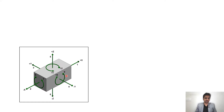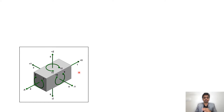Here you can see a part in space. Let's consider this is an object in space. How many degrees of freedom does this part have? When I say degree of freedom, I mean in how many different directions this part can be moved. We have three different axes in space: X, Y, and Z. We will have some translational motion along each axis and also some rotational motion.